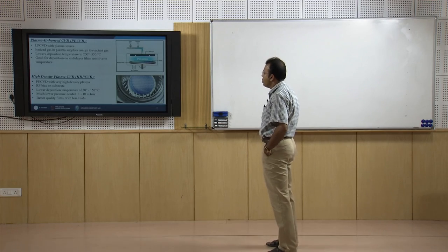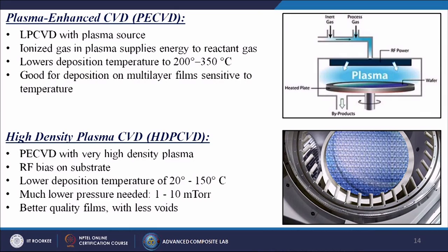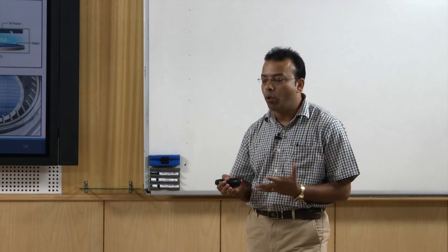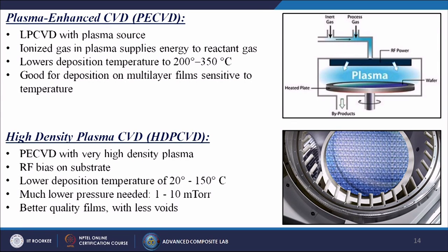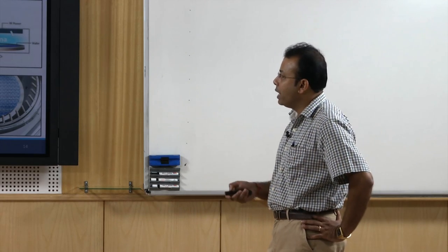Plasma-enhanced CVD (PE-CVD) uses a plasma source to ionize gas, supplying energy to reactant gases at lower deposition temperatures of 200 to 350 degrees centigrade — good for deposition on multilayer films sensitive to temperature. High-density plasma CVD (HDP-CVD) uses very high density plasma with RF bias on the substrate at much lower temperatures of 20 to 150 degrees centigrade and lower pressure of 1 to 10 millitorr, producing better quality films with fewer voids. HDP-CVD is more sophisticated than PE-CVD.